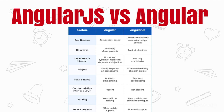For dependency injection, Angular has a whole hierarchical system, whereas AngularJS has only one injector. For scopes, Angular depends on components, whereas AngularJS access is restricted to the object in the project only. For data binding, Angular supports one-way binding while AngularJS supports two-way data binding.